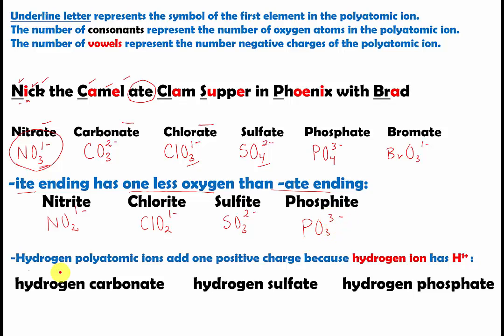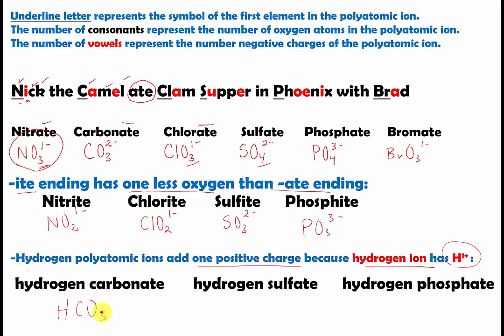Another type of polyatomic ion related to this mnemonic is the hydrogen polyatomic ions. By adding a hydrogen, you're adding a positive charge, because the hydrogen ion is one plus. So for hydrogen carbonate, the formula is HCO3. Notice the number of oxygen atoms does not change, but the charge changes — instead of two minus, it's now one minus, because hydrogen adds a plus one.